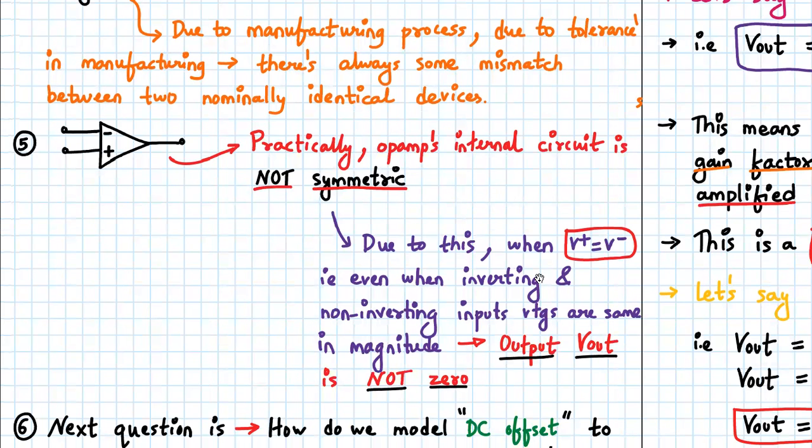So due to this, even when the inverting and non-inverting input voltages are the same in magnitude, the output is not equal to zero.